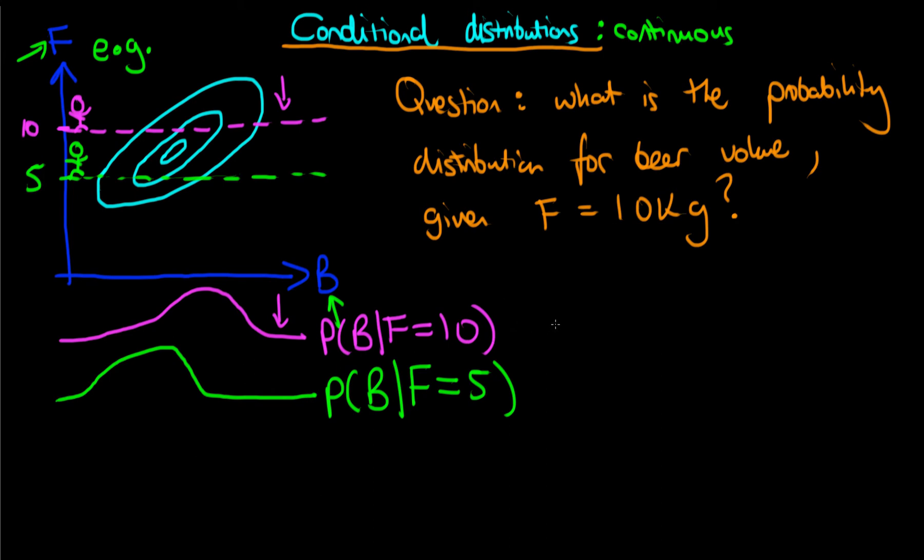But what's a formula that will allow us to derive it in any case? Well, the idea is that we can find it by just using the same form that we used for the discrete case. So the probability of beer volume, or the probability density of beer volume, given that F is equal to 10, is just equal to the joint distribution of beer volume and F being equal to 10, divided through by the probability of F being equal to 10.